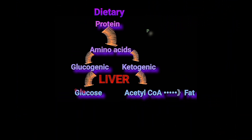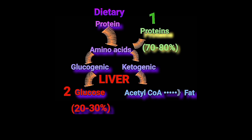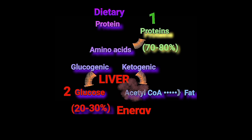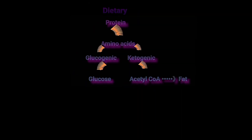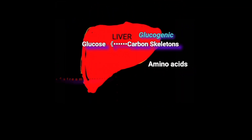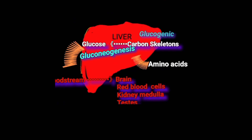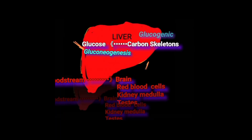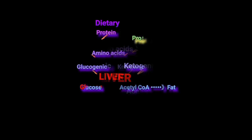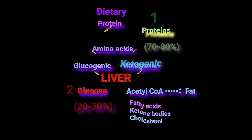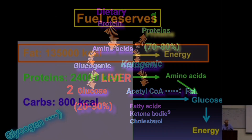Unlike glucose or dietary fat, excess amino acids cannot be stored, but they can be used as a source of energy by producing carbon skeletons from amino acid catabolism. This produces two types: glucogenic carbon skeletons, used by the liver in gluconeogenesis to resupply the bloodstream with glucose during fasting, and ketogenic carbon skeletons derived from acetyl-CoA, used to synthesize fatty acids, ketone bodies, and cholesterol.